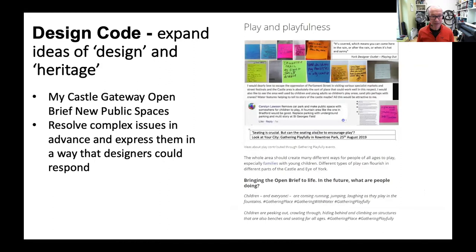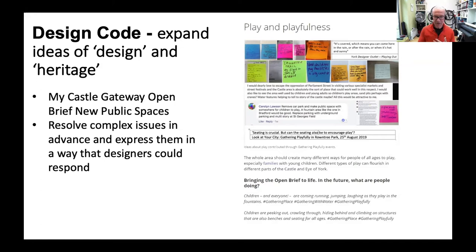Here's an example from the My Castle Gateway project: an open brief for new public spaces. The open brief presents the brief as stories of what might happen there, based on bringing together what people said they wanted to do there. We then sought to resolve the complex issues which came out of those narratives in advance and express them in a way which designers could then respond to.